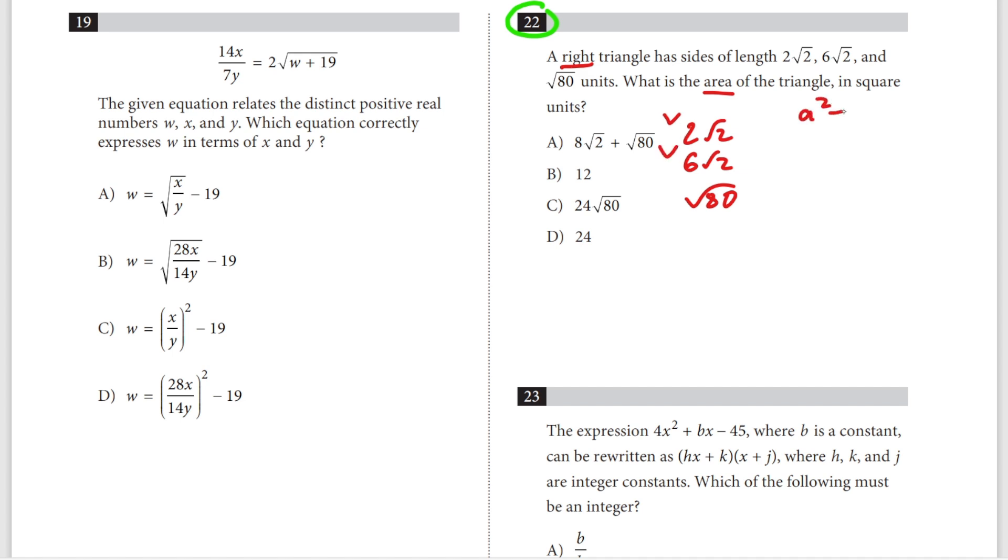Let's proceed with the Pythagorean theorem: a² + b² = c². So (2√2)² plus (6√2)² is supposed to equal (√80)². Now, 2√2 squared equals 8, 6√2 squared equals 36 times 2, and √80 squared equals 80.